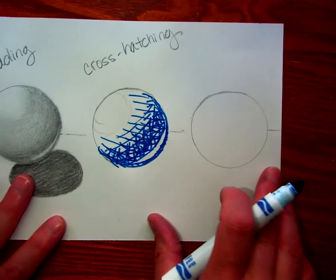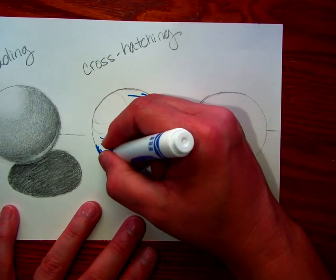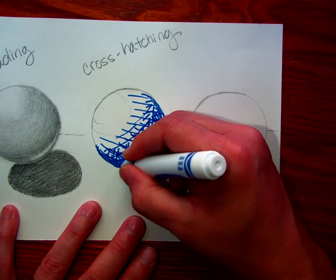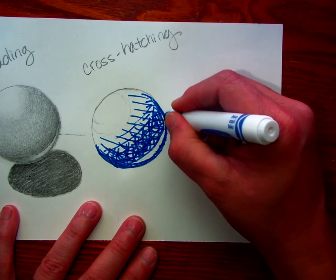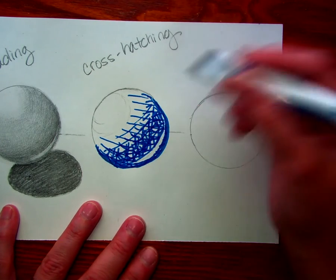See how I'm getting it darker as it goes in that way? I'm going to go around this again to clean up this edge a little bit.